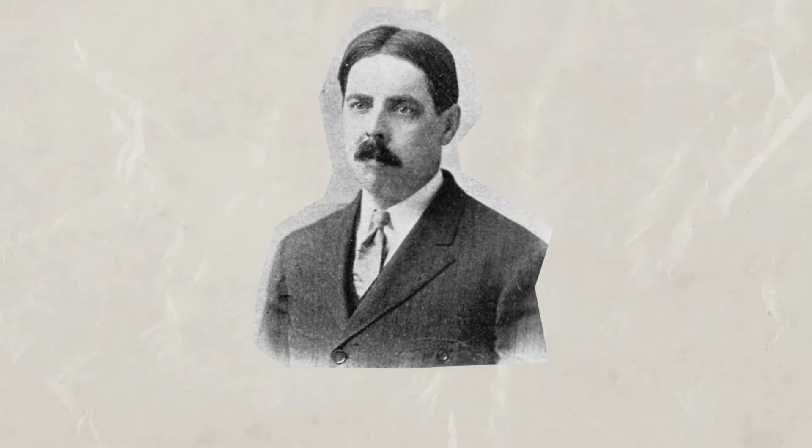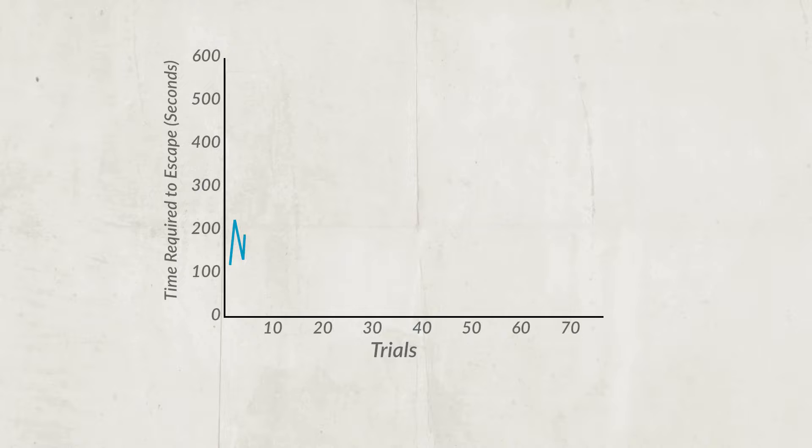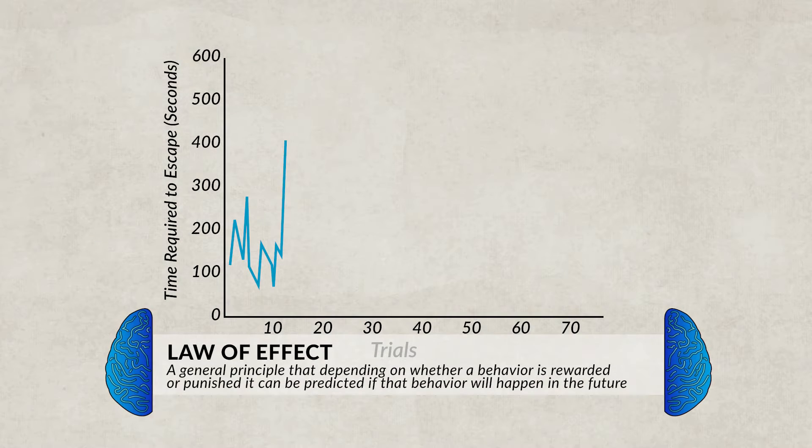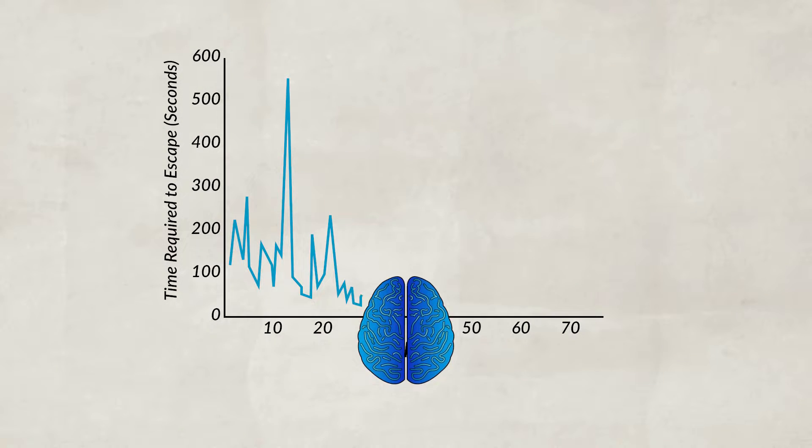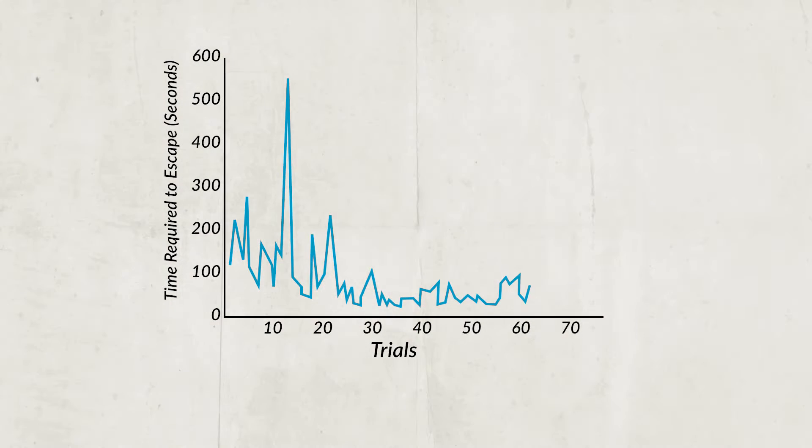Skinner's ideas used the work of Edward Thorndike as a starting point. Thorndike created an experiment where a cat was put into a puzzle box. At first the cat would meow, scratch, and dig, but the box had a latch — if the cat pushed on the latch the box would open and the cat would get food. As the experiment continued, the cats would no longer meow or scratch; instead they would push the latch right away and get their reward. This early version of operant conditioning became known as the law of effect: when behaviors are followed by favorable consequences they become more likely to occur, and when followed by unfavorable consequences they become less likely to occur.